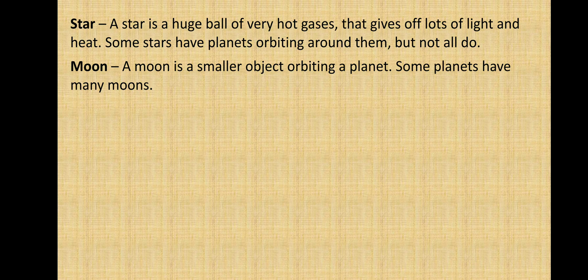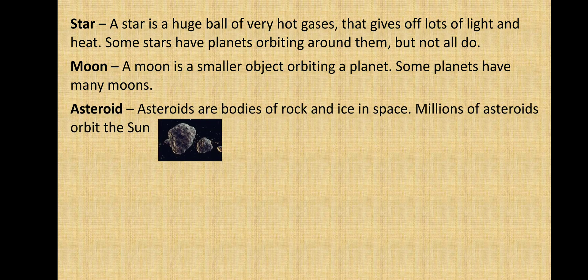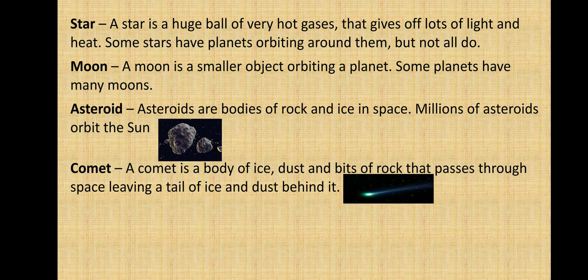Next we have the moon. A moon is a smaller object orbiting a planet. Some planets have many moons. Even Earth has a moon, which we'll discuss. Then we have asteroids — bodies of rock and ice in space. Millions of asteroids orbit around the sun.